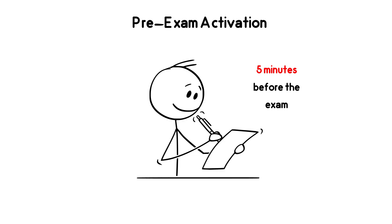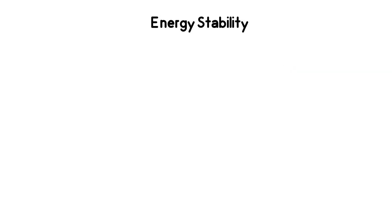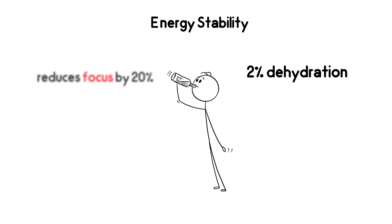Pre-exam activation. Five minutes before the exam, quickly summarize everything on paper. This activates neural pathways right before starting. Energy stability. Drink water every hour. Even 2% dehydration reduces focus by 20%. And remember, energy drinks are forbidden. They boost concentration at first, but then cause a sharp crash afterward.